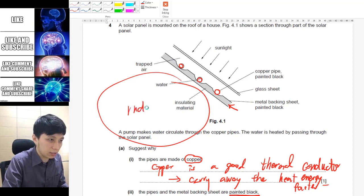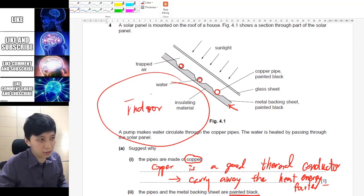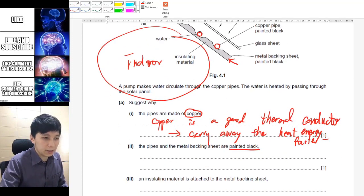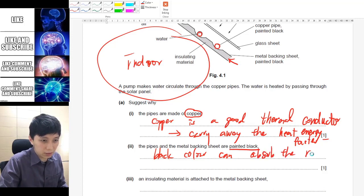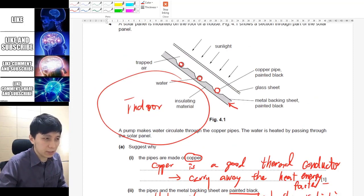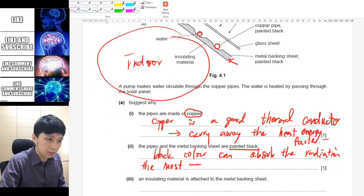And the design is that when you paint the back black, obviously the black color can absorb the radiation the most.